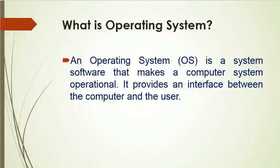According to the definition of the operating system, an operating system is a system software that makes the computer system operational. It provides an interface between the user and the computer. It is a group or set of programs that manages the computer system resources like files, folders, components, external hardware, the devices connected to the computer, and other application software that run on the computer. It plays an important role in making the computer system operational for the users to work on it.